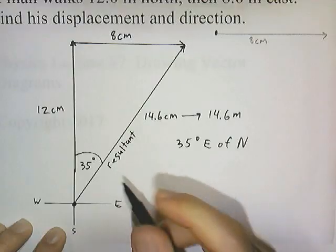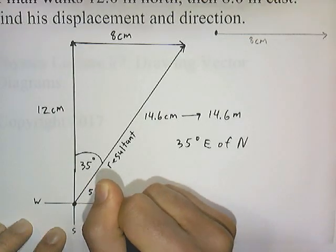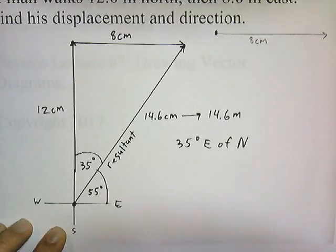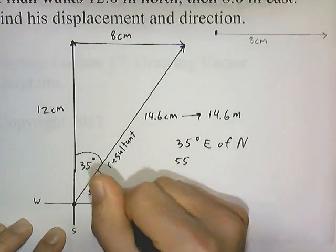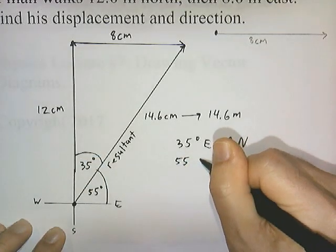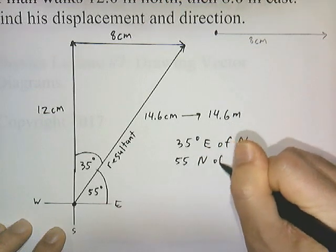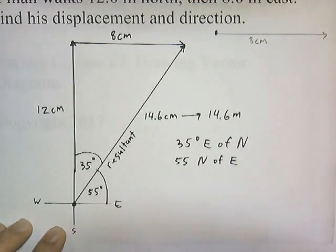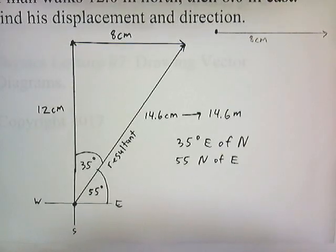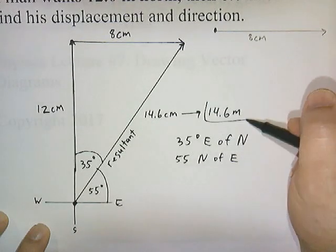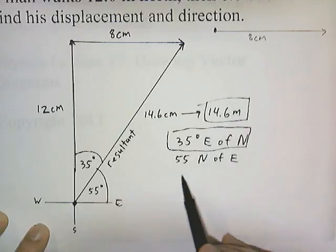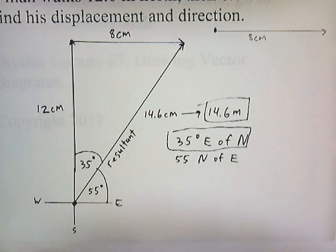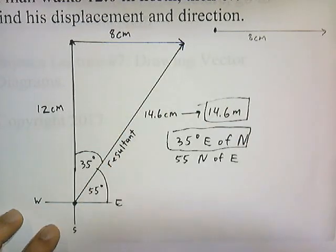This angle here is 55 degrees, so another possible answer is 55 degrees above or to the north of the east axis — 55 degrees north of east. Our resultant vector is 14.6 meters, 35 degrees to the east of north. Or you could say 14.6 meters, 55 degrees to the north of east. That's how you draw vectors to solve how far someone has moved and in what direction they're moving.